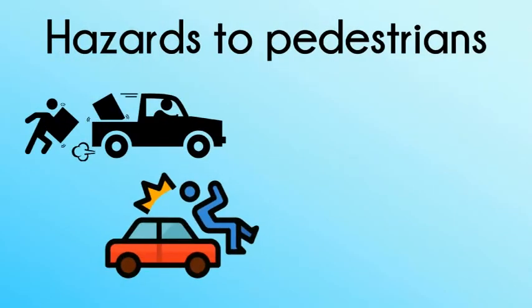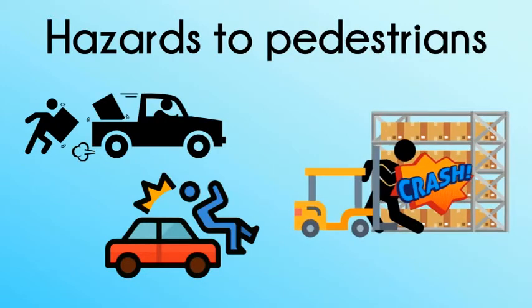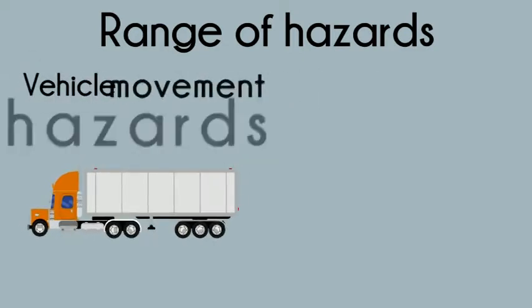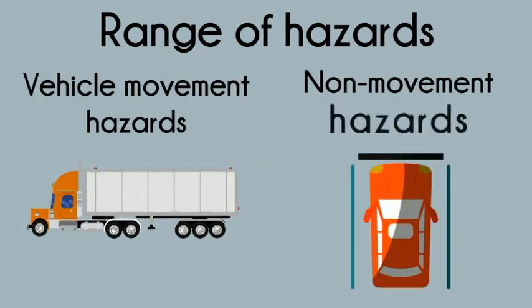The operations of vehicles in a workplace creates risks for pedestrians, vehicle drivers and their passengers. Significant hazards to pedestrians include being struck by objects, collisions with moving vehicles and striking against fixed and stationary objects. There are a range of hazards associated with workplace transport operations and these include vehicle movement hazards and non-movement hazards.